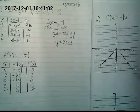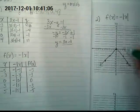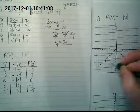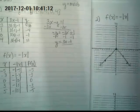Absolute values always graph as a V. If they're positive, they'll be up. If they're negative, they'll be down.